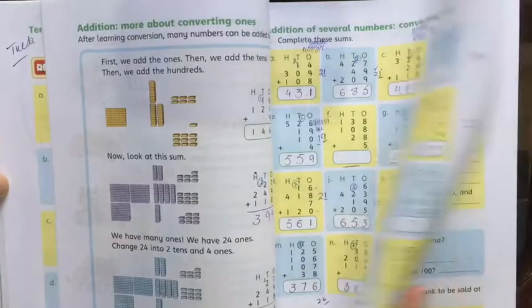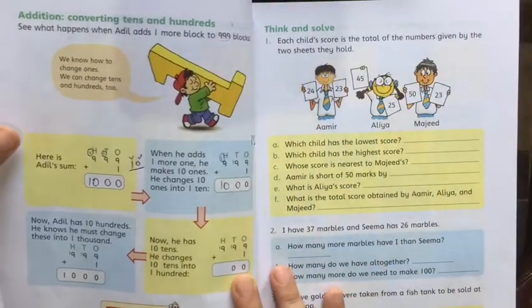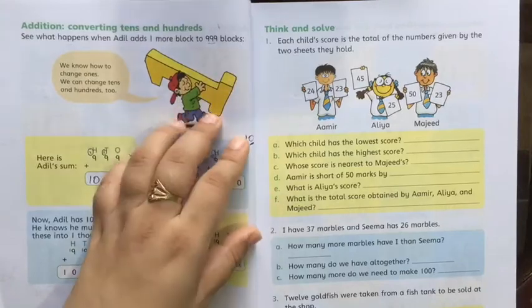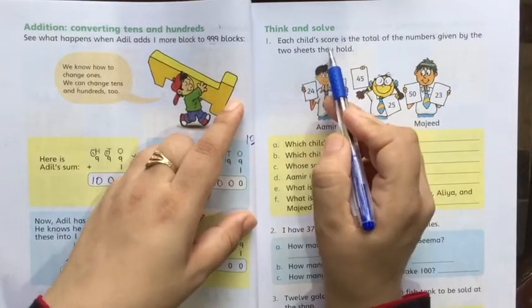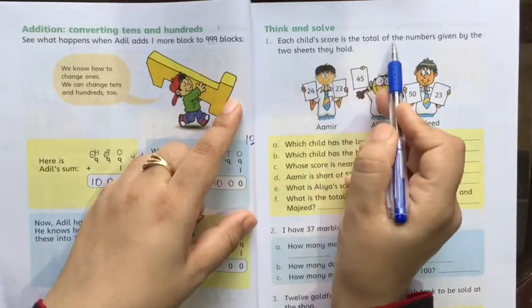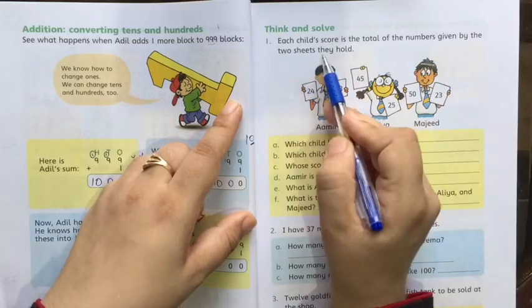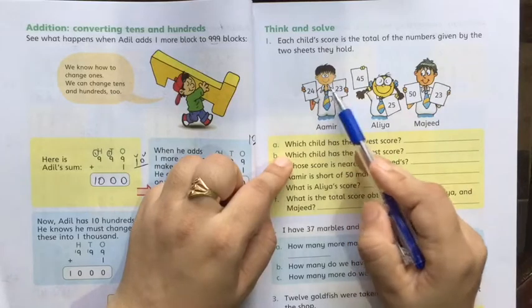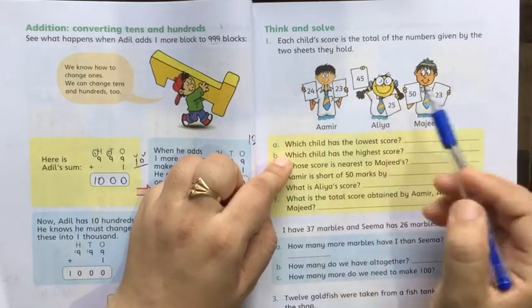How are you all, I hope you're well. Now we are going to do our math, so hurry up, open your books and come to page number 39. Each child's score is the total of the numbers given by the two sheets they hold. Each one has two sheets holding their own numbers.